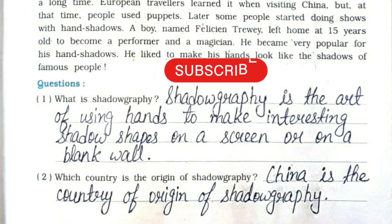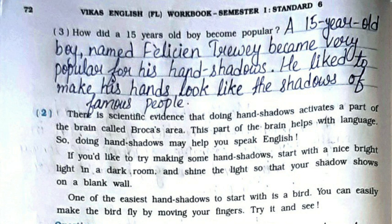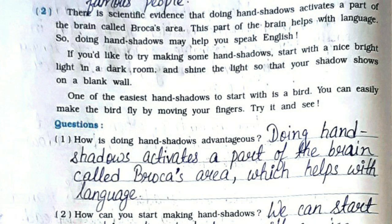Second: Where did the poet find his shadow when one morning he got up before sunrise? One morning when the poet got up before sunrise, he found his shadow on every buttercup. Third: Pick out the adjectives used for shadow in this stanza. The adjectives used for shadow in this stanza are lazy, little, errant, and sleepyhead.